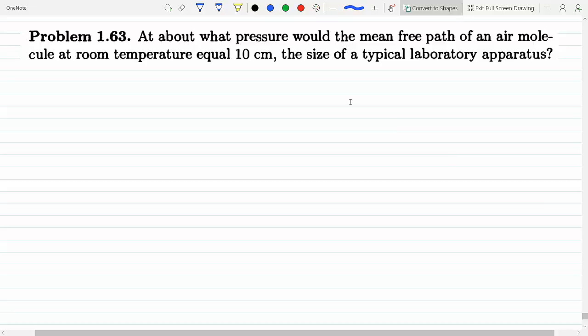At about what pressure would the mean free path of an air molecule at room temperature equal 10 centimeters, the size of a typical laboratory apparatus? Okay, well if you read the section on the conductivity of non-ideal gas, this is predicated on a model that depicts that collisions would be so frequent.